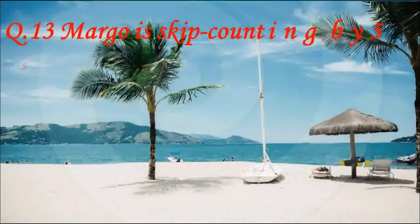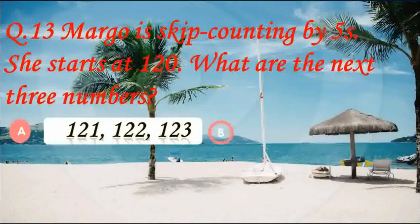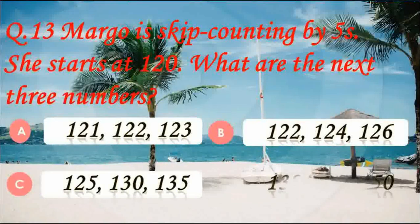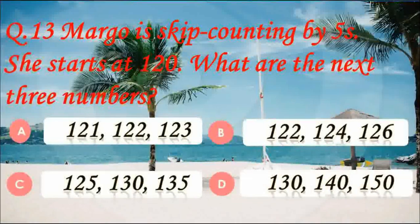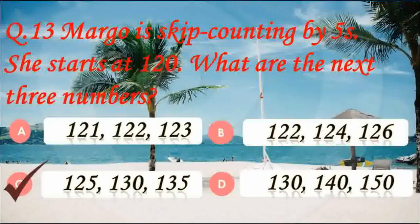Question number 13. Margot keeps counting by 5 numbers. She starts at 120. What are the next 3 numbers? Answer C — 125, 130, 135. We skip 5 numbers each time. After 120: 125, 130, and 135.